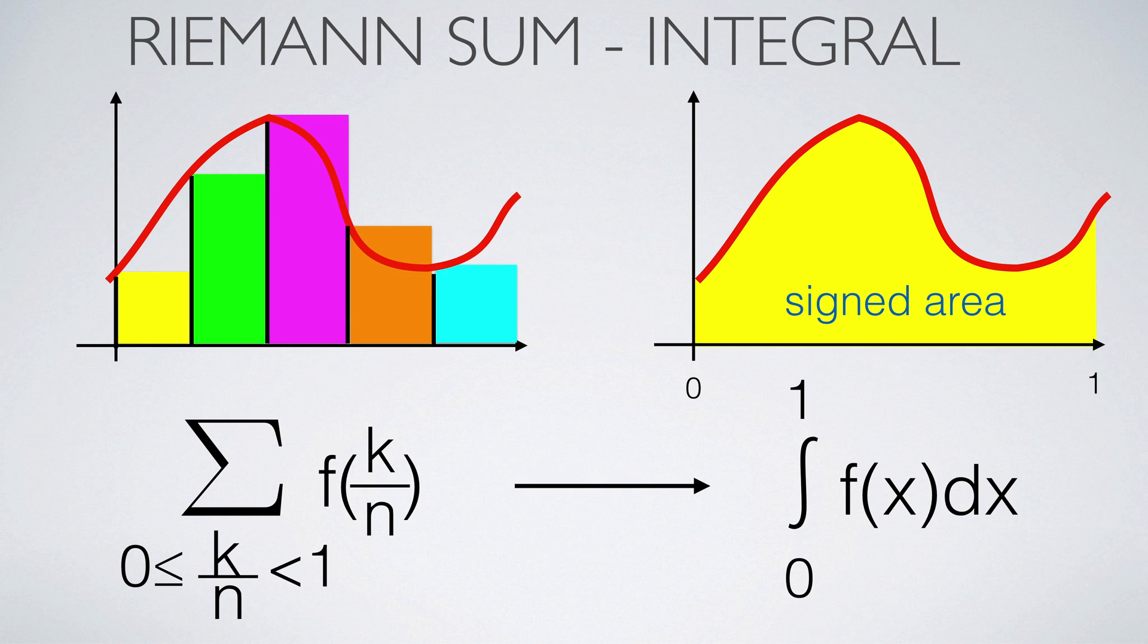The integral of a function is defined by a limit of Riemann sums. Given a continuous function on an interval, the integral exists. It has the interpretation of a signed area. The adjective 'signed' is used since the function can also be negative, leading to a negative integral.